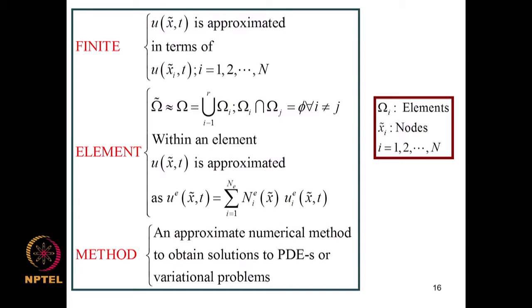Each element has simple unknowns and an interpolation function. While the performance of a single element is not exceptional, the entire finite element procedure delivers superior performance in analyzing very complex problems involving complexity in geometry, constitutive laws, and so on. The word 'finite' originates because the field variable is approximated at a finite number of nodes. The domain is approximated as a union of non-intersecting subdomains called elements. Finite element method is an approximate numerical method to obtain solutions to partial differential equations or variational problems.